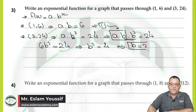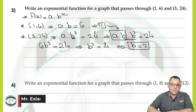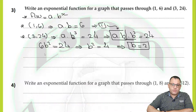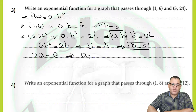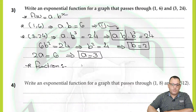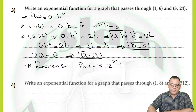Now we have found the value of b. Going back to equation number one with b equals 2: 2a equals 6, so a equals 3. Now we can write the function: f(x) equals a, which is 3, times 2 to the power x.